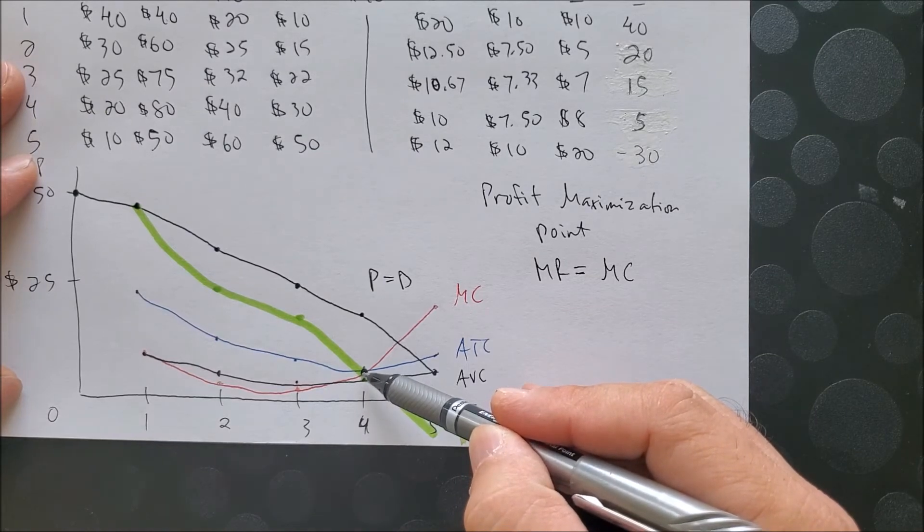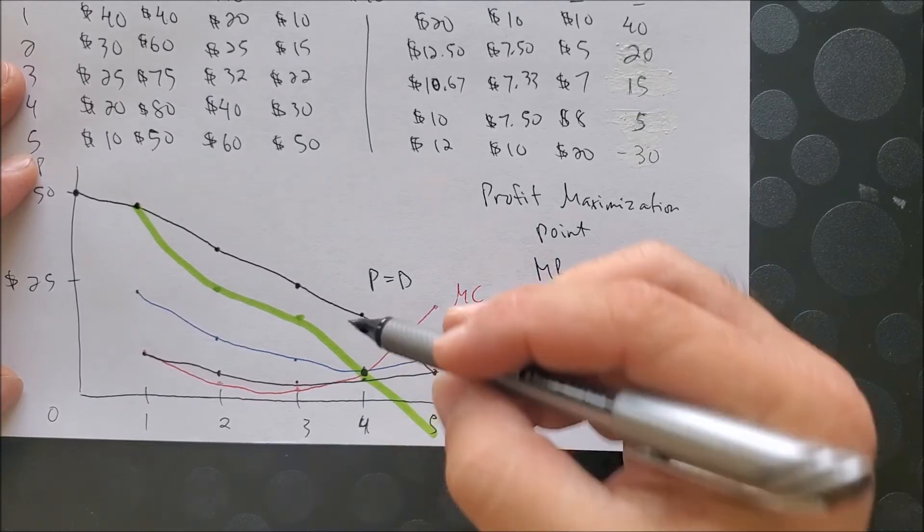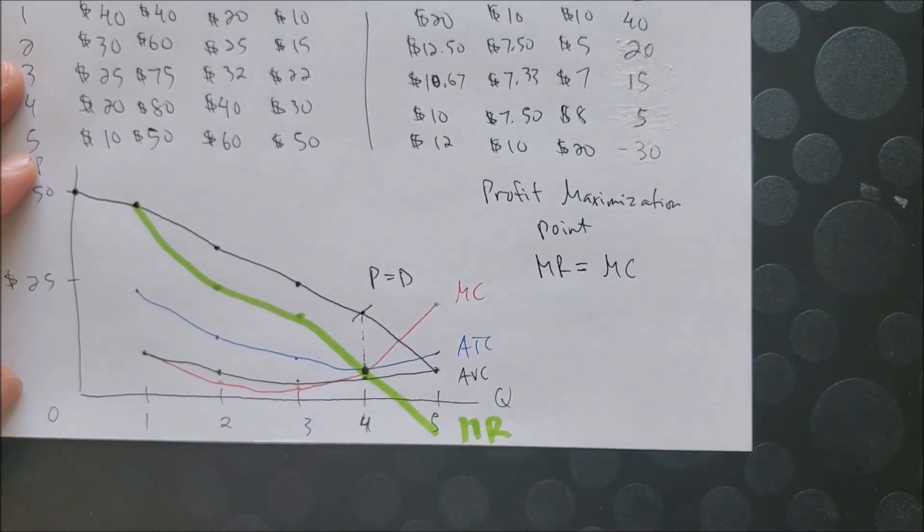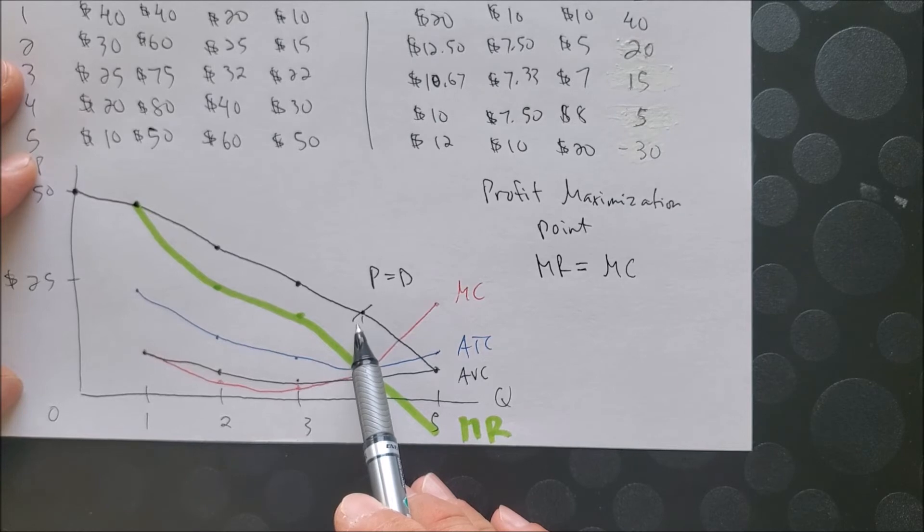But since there is a price demand curve that's separate from MR, the monopolist is going to charge a much higher price. So this is where they are going to set price. Hence the term price setter.